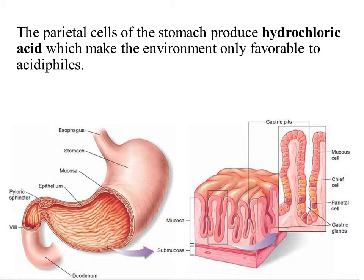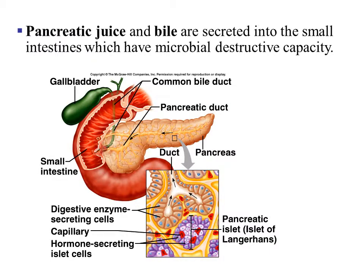The next chemical process is produced from the parietal cells of the stomach. They produce hydrochloric acid, which lowers the pH in the stomach so that only acidophiles can exist. Additionally, pancreatic juices from the pancreas and bile from the liver are both secreted into the first portion of the small intestine called the duodenum, and both of these chemicals help destroy microbes.